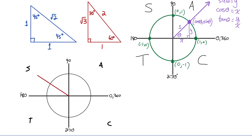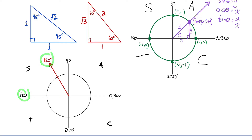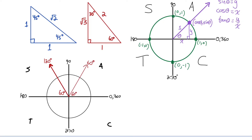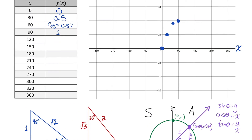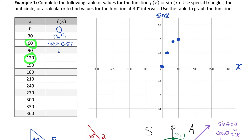Now we go through quadrant 2. Rotating 120 degrees brings us to a terminal arm with a reference angle of 60 — the angle between the terminal arm and the closest x-axis. Since sine is positive in quadrant 2, sine of 120 equals sine of 60, which is 0.87. So I plot the point at 120, 0.87.